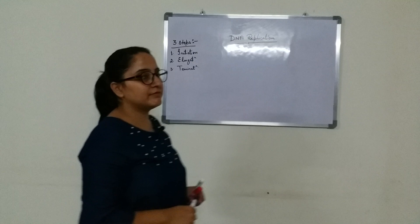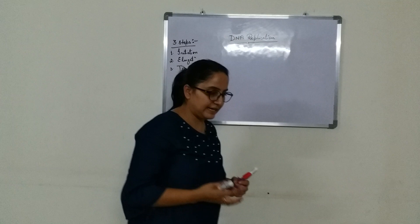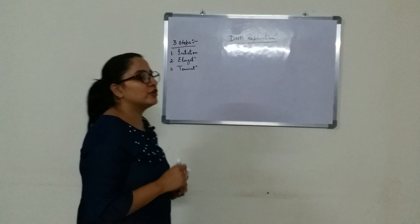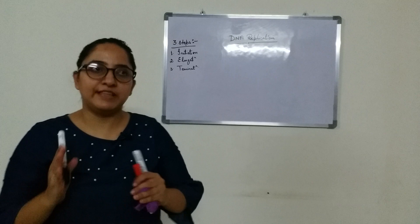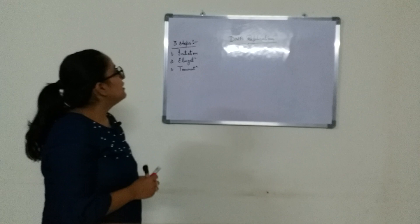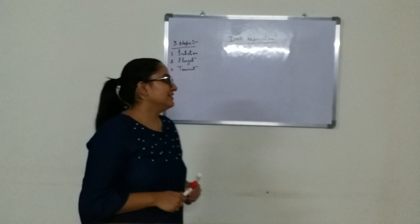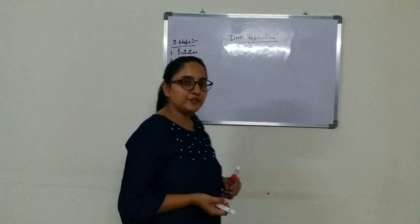The experimental proof for semi-conservative replication was given by scientists Meselson and Stahl. They did an experiment on E. coli, a prokaryotic cell, and proved that DNA replication is semi-conservative. For a detailed explanation of that experiment, please go through my video on the same topic, and please subscribe to my channel.